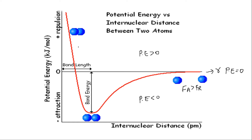In the other extreme situation, as seen from the graph, the value of r is very small — the distance between the atoms is very small. When the distance is very small, the force of repulsion increases and force of attraction does not dominate in this situation.